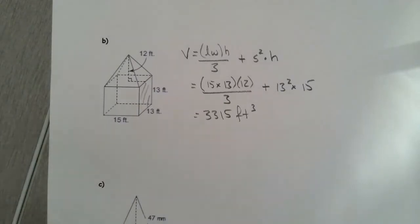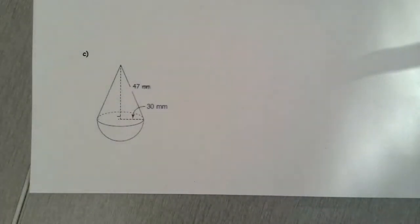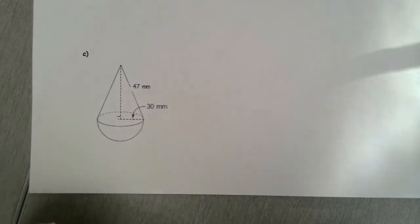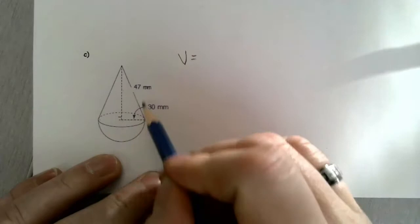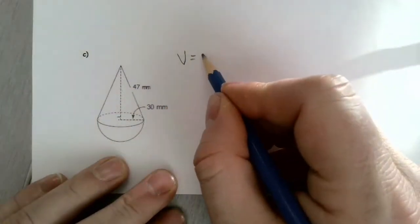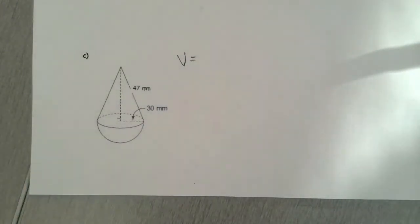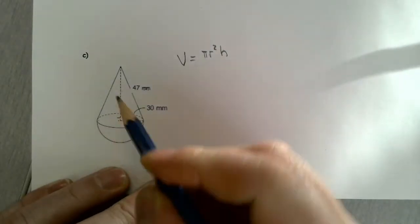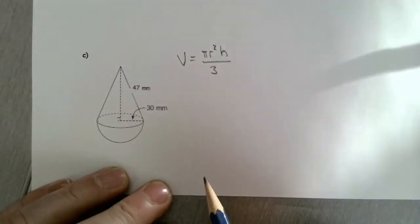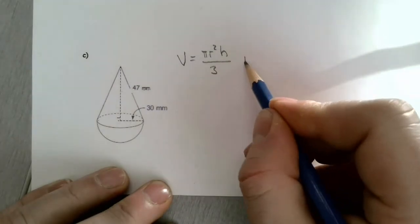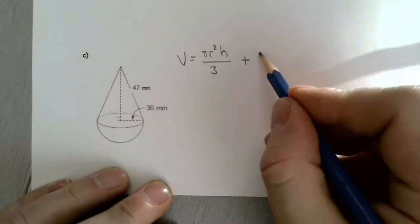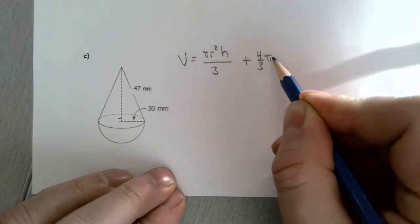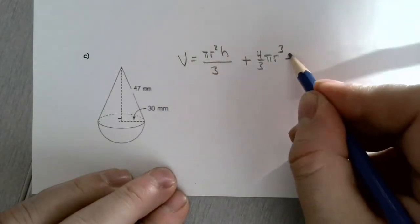Just a matter of grabbing the right formulas and putting them together. For this question, we're putting a cone onto a hemisphere — it kind of looks like an upside-down ice cream cone. When we put the volumes together, we're going to take the volume of the cone, which is one-third the volume of the corresponding cylinder: pi r squared multiplied by height, divided by three. Then we add the volume of the hemisphere, which is half of a sphere. The volume of a sphere is four-thirds pi r cubed, and then I'm going to divide that by two.